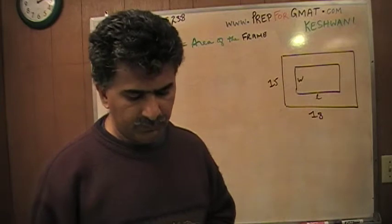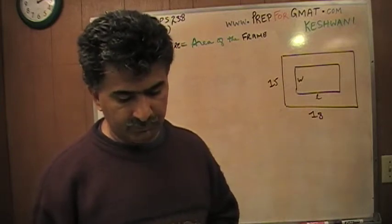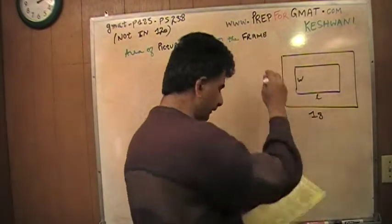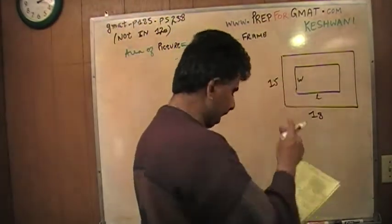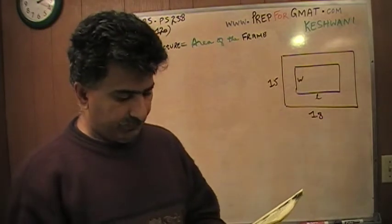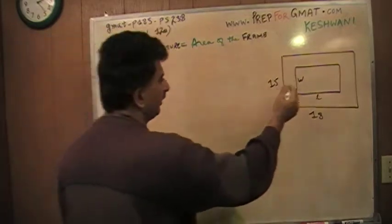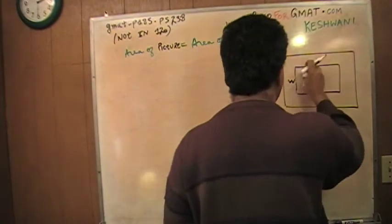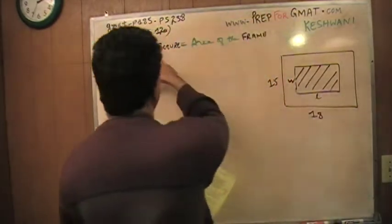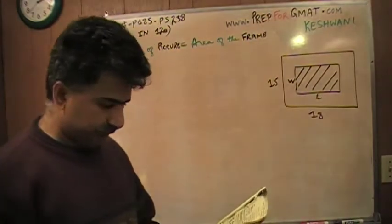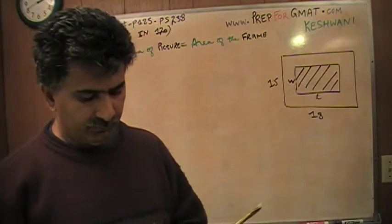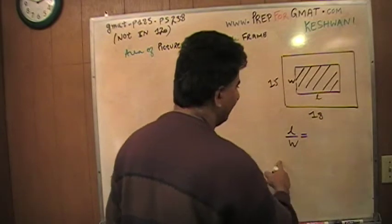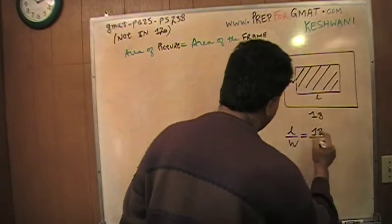Read the problem. It says the shaded region in the picture represents a rectangular frame with length 18 inches and width 15 inches. The frame encloses a rectangular picture and we are told it has the same area as the frame itself. If the length and the width of the picture have the same ratio as the length and the width of the frame, the question simply is, what is the length?